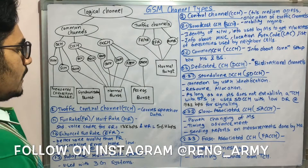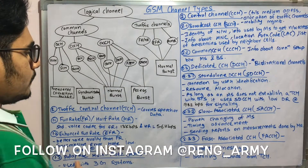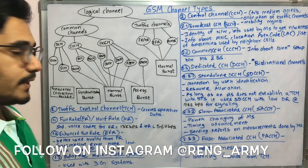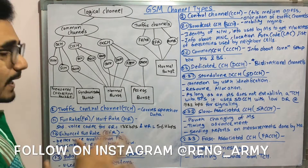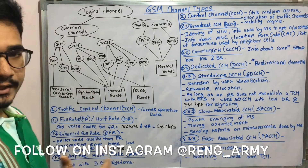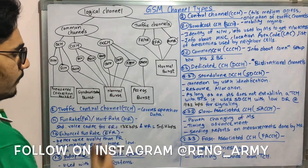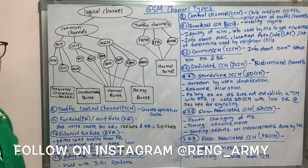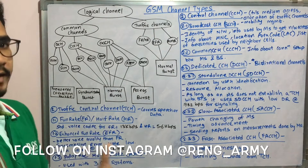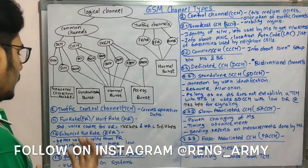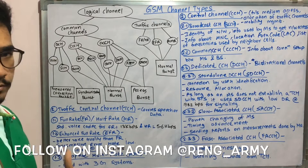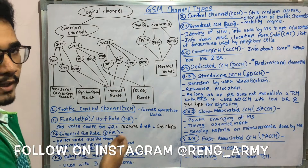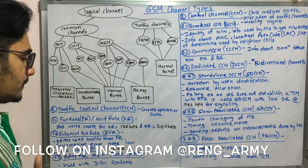Traffic channels, also called TCH, carry speech or data. For full rate (FR), the standard voice codec is around 13 kbps, and for half rate (HR) it is about 5.6 kbps. Enhanced full rate (EFR) offers better quality than FR, with a very low transmission error rate and a data rate of about 12.2 kbps.